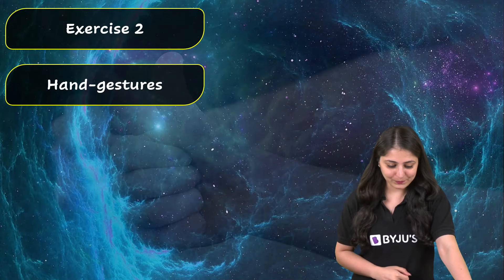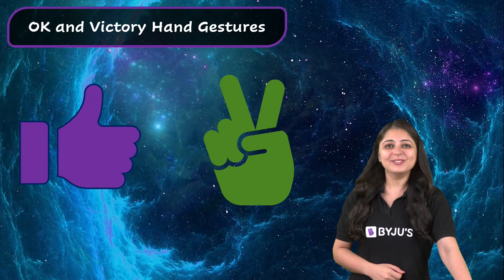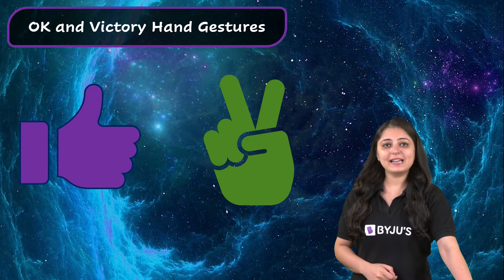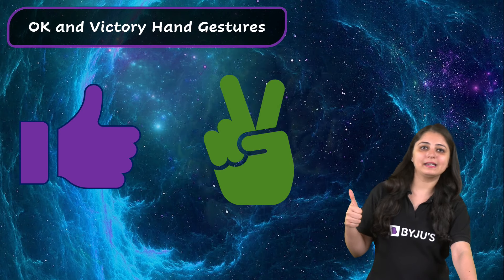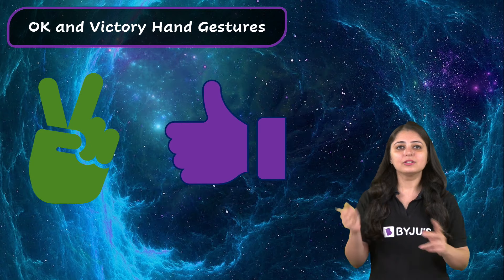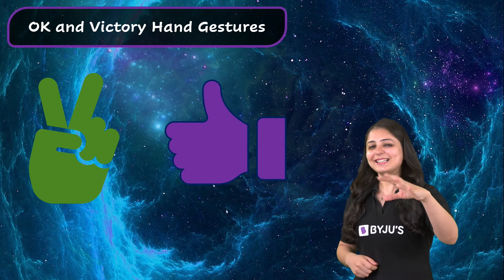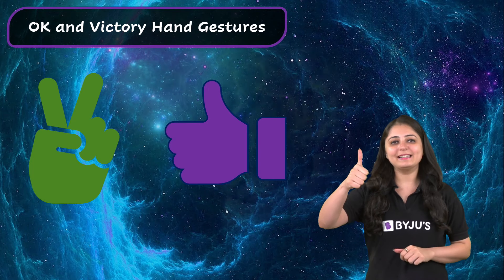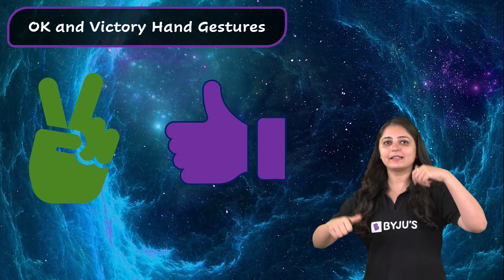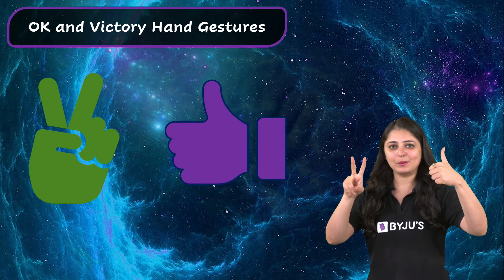Let's see what's point number two: Hand gestures. You can try this one right away actually. Right hand se OK and left hand se victory sign. And then you have to swap it. Let's try this out. Right hand se we are doing OK, left hand se we are doing victory sign. Then left hand se OK, right hand se victory sign. Let me try to do it.